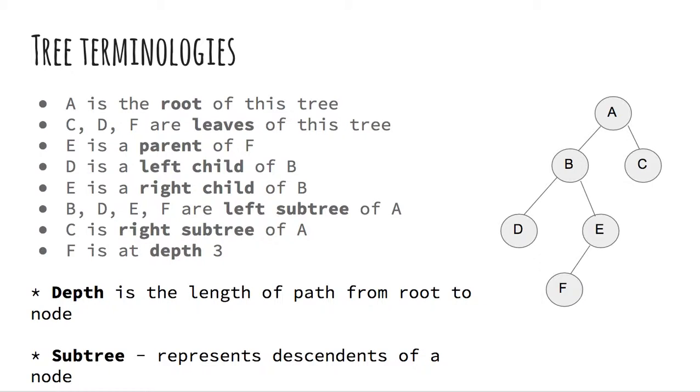Now, we are going to go over some specific terminologies for a tree. Here, A is the root of this tree because A can reach every other node in this tree and A has no parent. C, D and F are leaves of this tree because they do not have any children.